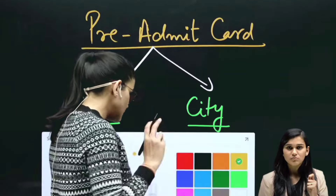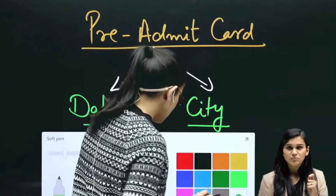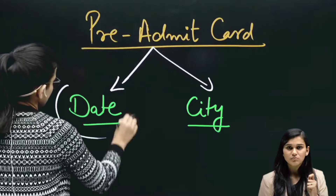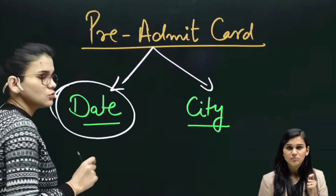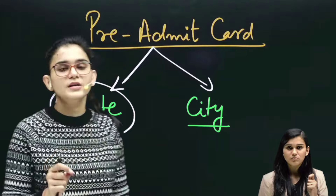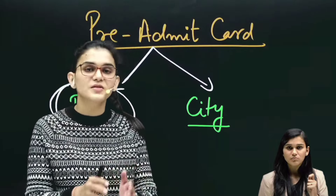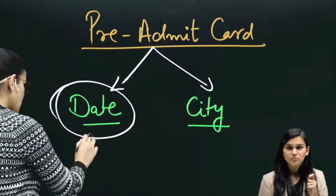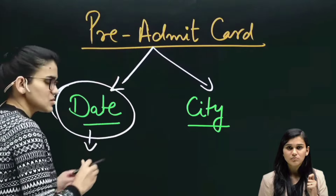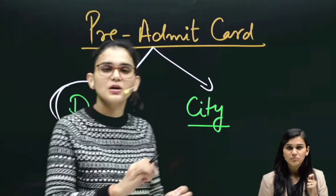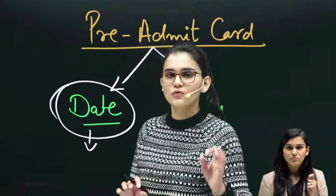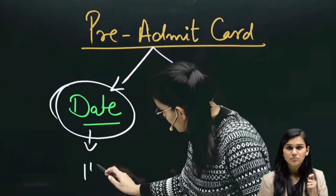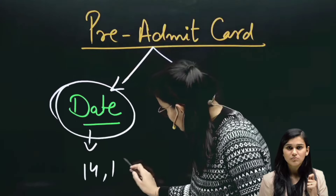If I talk about pre-admit cards, they tell you two things. One is the date of the exam — whether it's the 14th or the 15th. When you download it using your application number and date of birth, you will know whether your exam date is the 14th or the 15th.